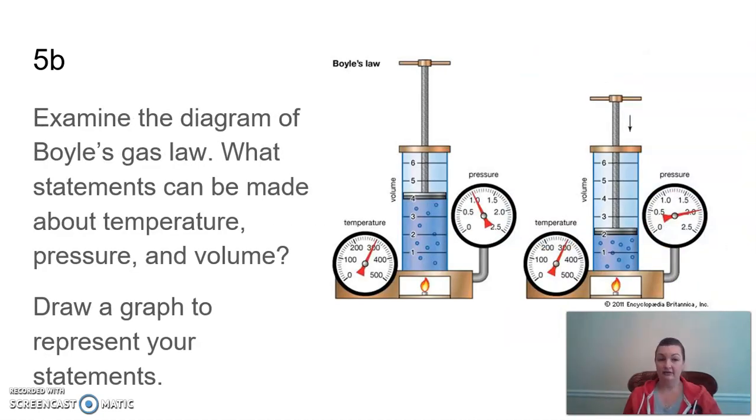We're going to get into our first gas law. So it says, examine the diagram of Boyle's gas law. What statement can be made about temperature, pressure, and volume? And then draw a graph to represent your statements. So let's look at these contraptions. These are just containers. It's filled with a substance that's a gas, because these are gas laws. We can see on here that we have the volume is all the way up to four, while the volume is just up to two on this one. So this is a much larger volume.